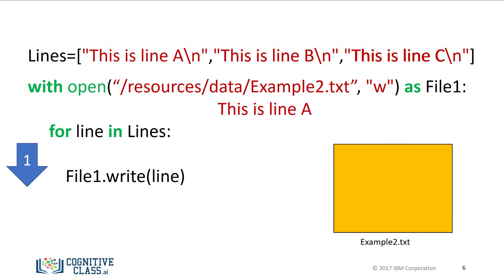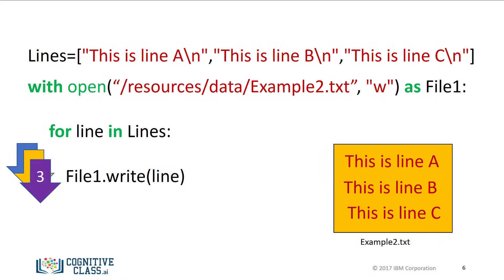The first iteration of the loop writes the first element of the list to the file example2. The second iteration writes the second element of the list, and so on. At the end of the loop, the file will be closed.